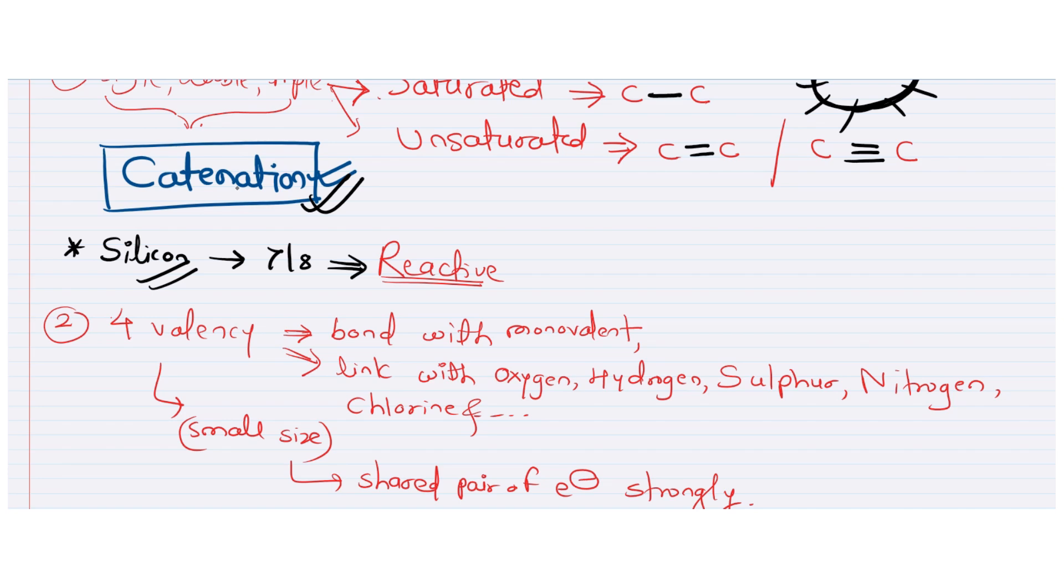Silicon is the exception in this. It can make chains up to 7 to 8 atoms. But this type of formation is very reactive and unstable. If it is reactive, then how it can be stable? So we have touchwood, we have carbon, carbon compounds which are very strong and stable. So this gives us a large number of compounds with many atoms linked with each other.